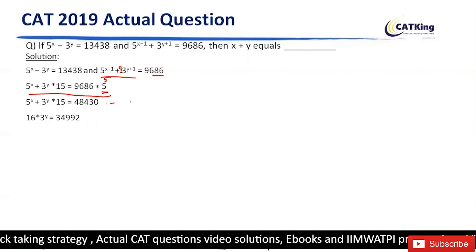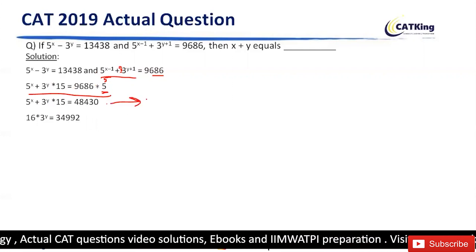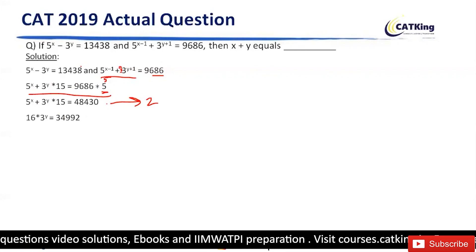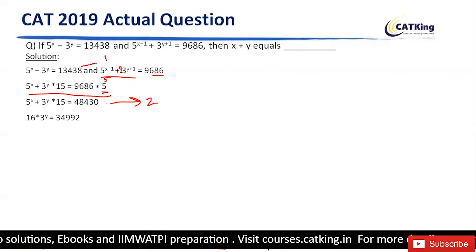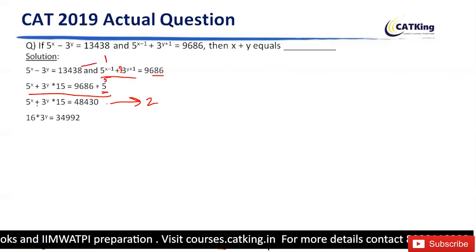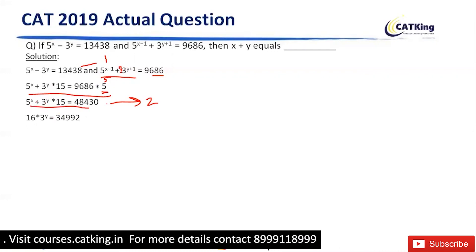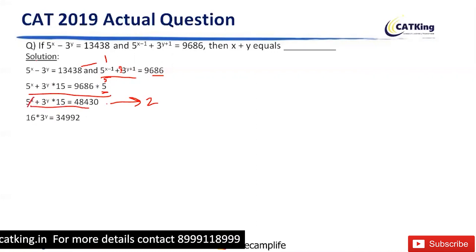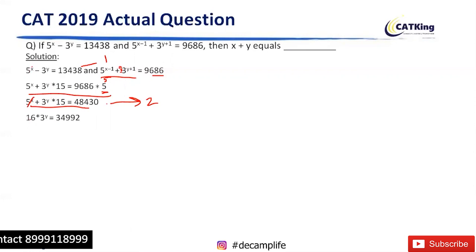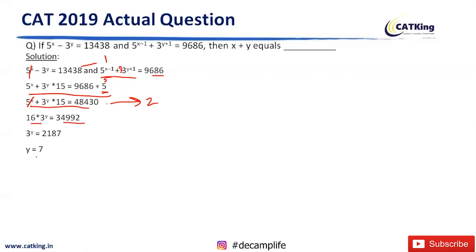This is equation 2 and this is equation 1. By subtracting these two equations, we have got 5 raised to x — it will get cancelled out. So 15 plus 1, that is 16, raised to y will become this. So by solving, we will get the value of y is 7.